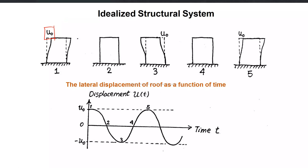So let's say we allow the idealized structure to be displaced laterally by u-naught — this is our initial displacement. After displacing it at this specific distance, it is released. The structure has a concentrated mass at its topmost part, and the columns, though infinitely rigid in the vertical direction, are flexible in the lateral direction. So the columns have a stiffness k.